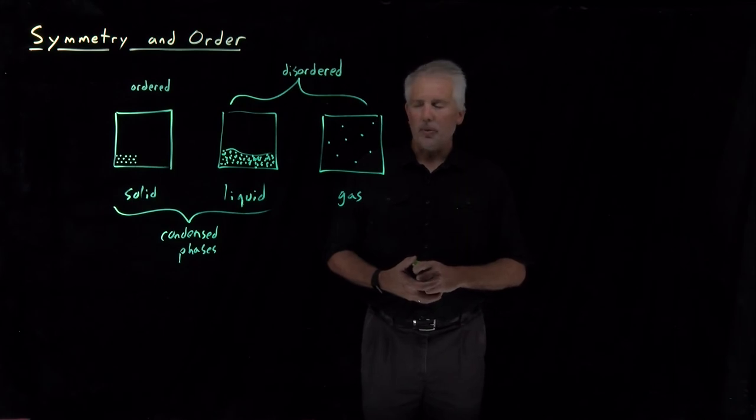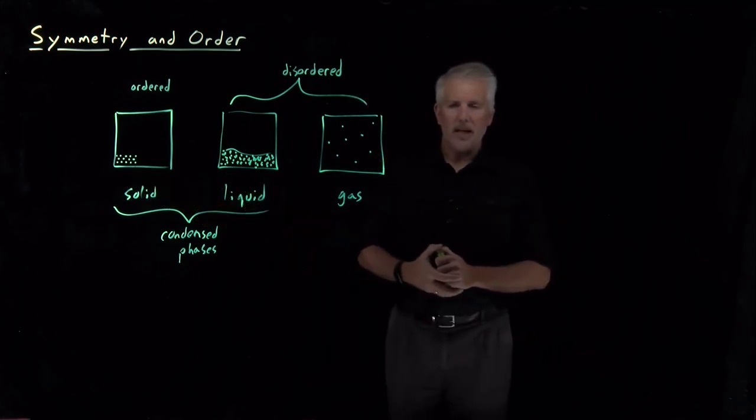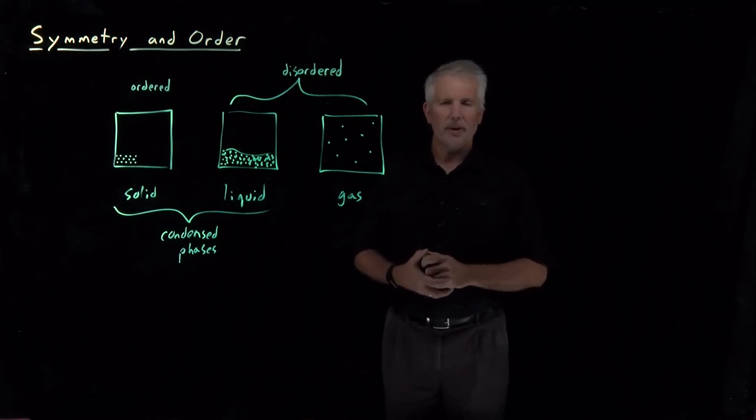But that just raises a similar question. What do I mean by symmetry? What does it mean to say the solid is symmetric and the atoms in the liquid are not symmetric? Or maybe they're less symmetric? Can I be more symmetric or less symmetric or more ordered or less ordered?